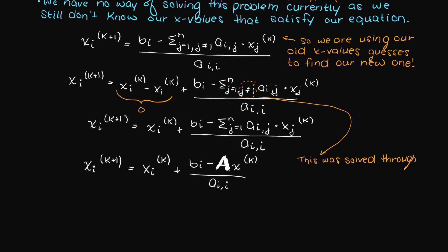Therefore we are left with the following equation for the next iteration of xi. This term here, bi minus our A matrix times x values at an iteration of k.